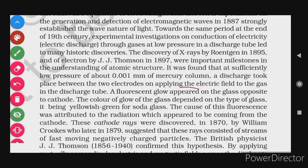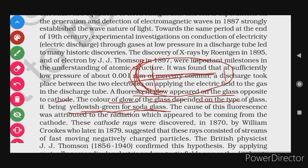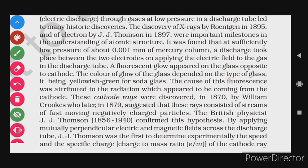Just as explained — at low pressure with high voltage applied, there will be a discharge. We can observe with the fluorescence: a fluorescent glow appears on the glass opposite to the cathode. The color of the glow depends on the type of glass — yellowish-green for soda glass. The cause of this fluorescence was attributed to radiation appearing to come from the cathode, which is why these are called cathode rays.